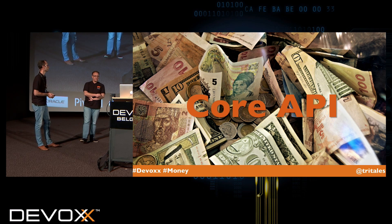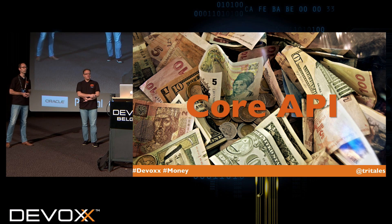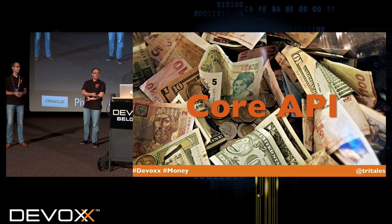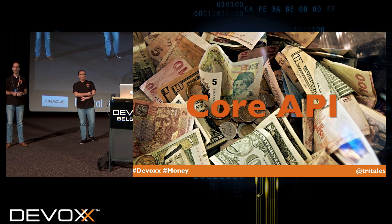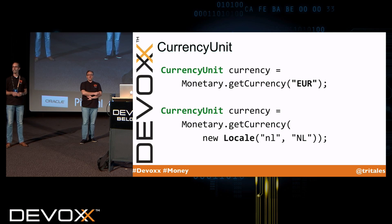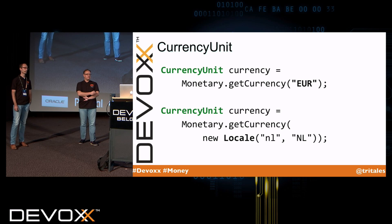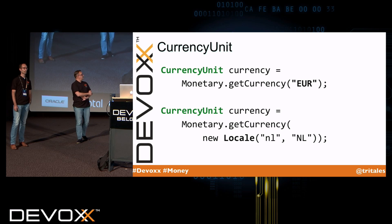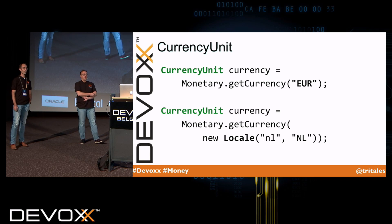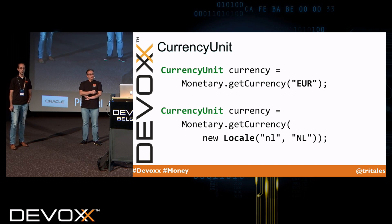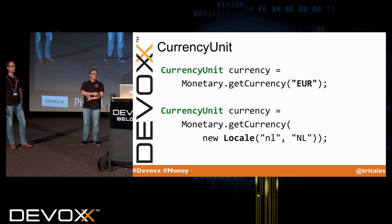So let's have a look at the JSR itself. As we've seen, money is made of two parts: a value and a currency. In the JSR, the currency is represented by the CurrencyUnit interface. Implementations are required to be both thread-safe and immutable. Here we see two easy ways to get your hands on a currency — call the Monetary singleton and pass in the currency ISO code or your locale.